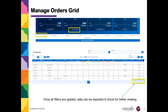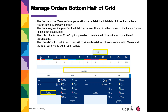Once those filters have been applied, an order grid will appear. You can export the data to Excel for easier viewing. The bottom half of the Manage Orders grid will give you additional detail information. It provides a summary of the total types of orders that you've filtered, and you can get additional information on those filtered transactions. The Details button will provide a breakdown of each variety and the total dollar amount.